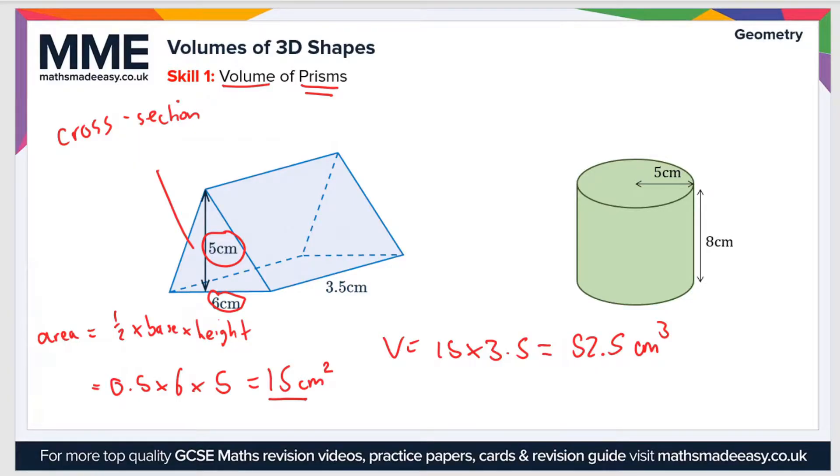So let's have a look now at the cylinder here. A cylinder is essentially just a circular prism. So in order to calculate the area of the cross section, we'll use the area of a circle, which is pi r squared. Now r equals 5, that's this radius here, which is 5. So if we put that into the formula, that gives us 5 squared times pi, so the area is 25 pi.